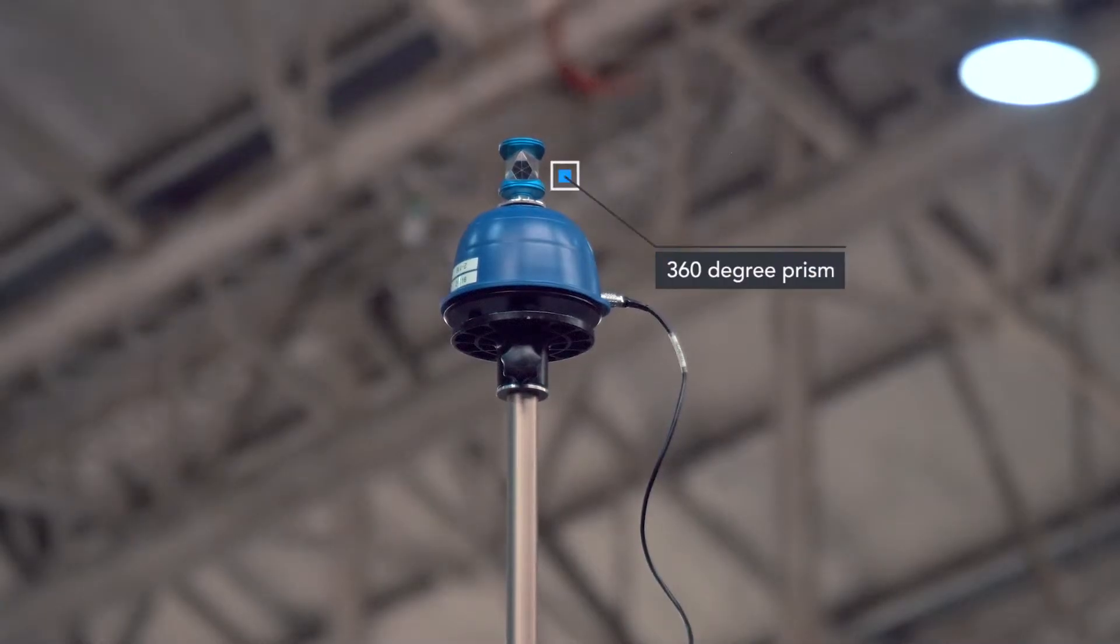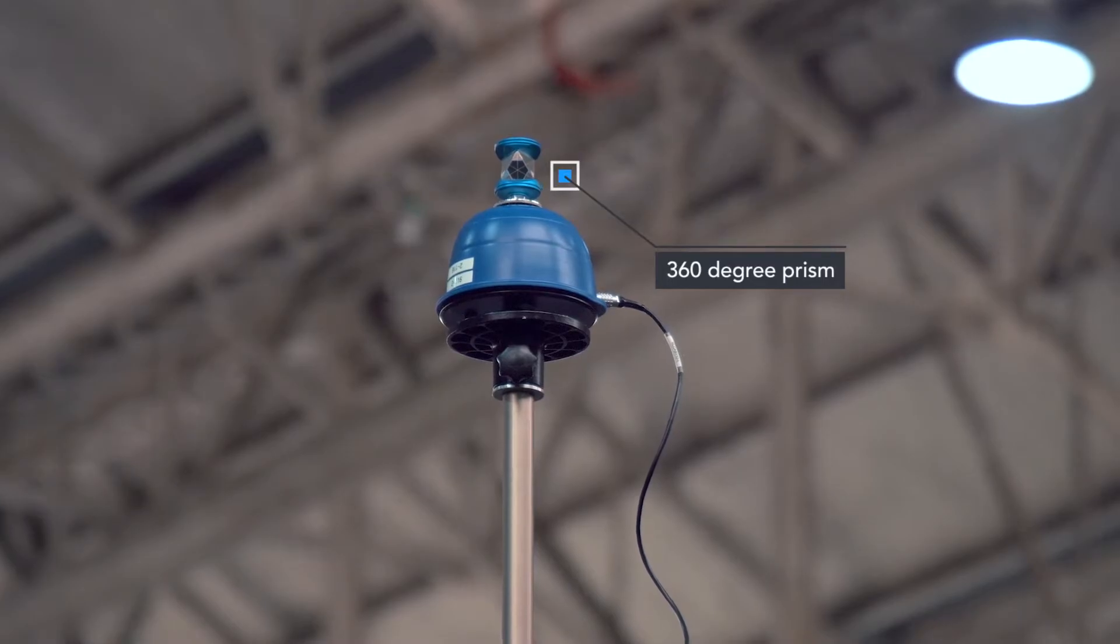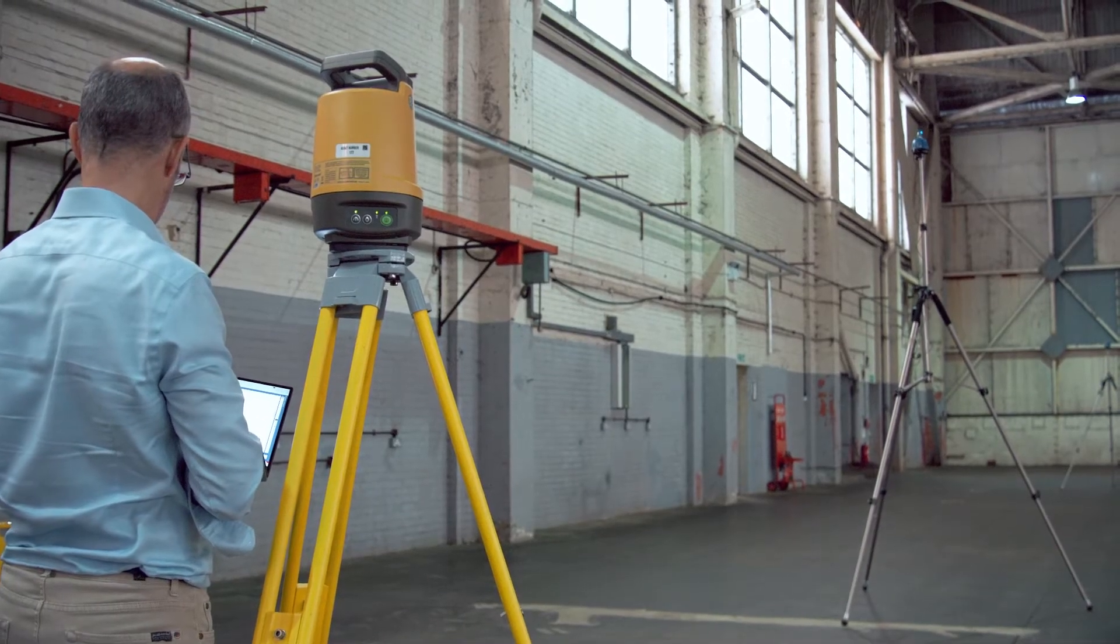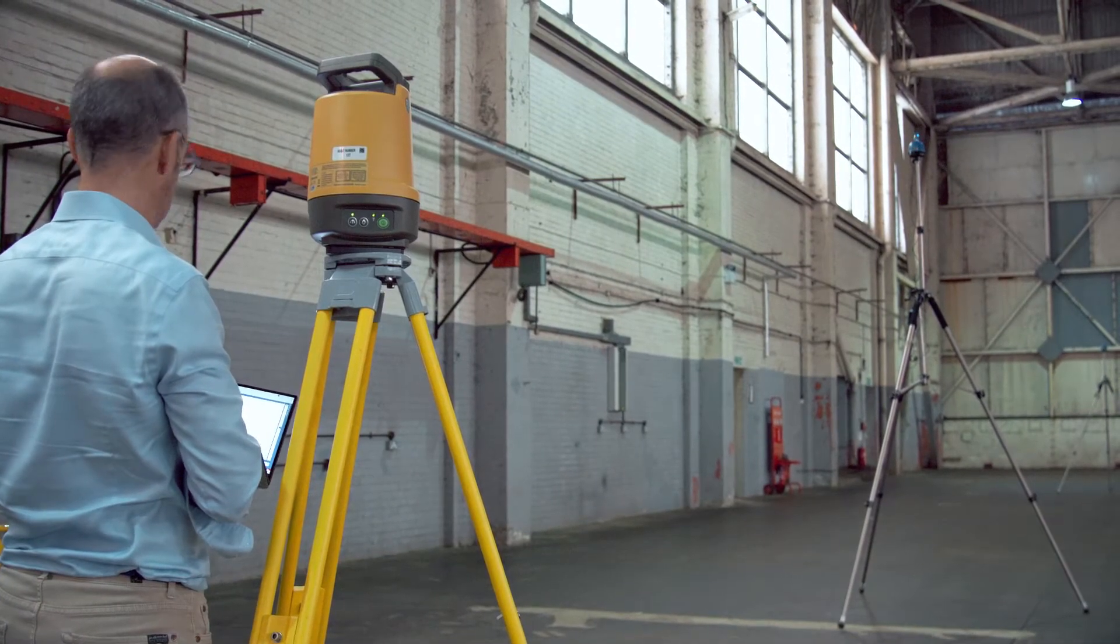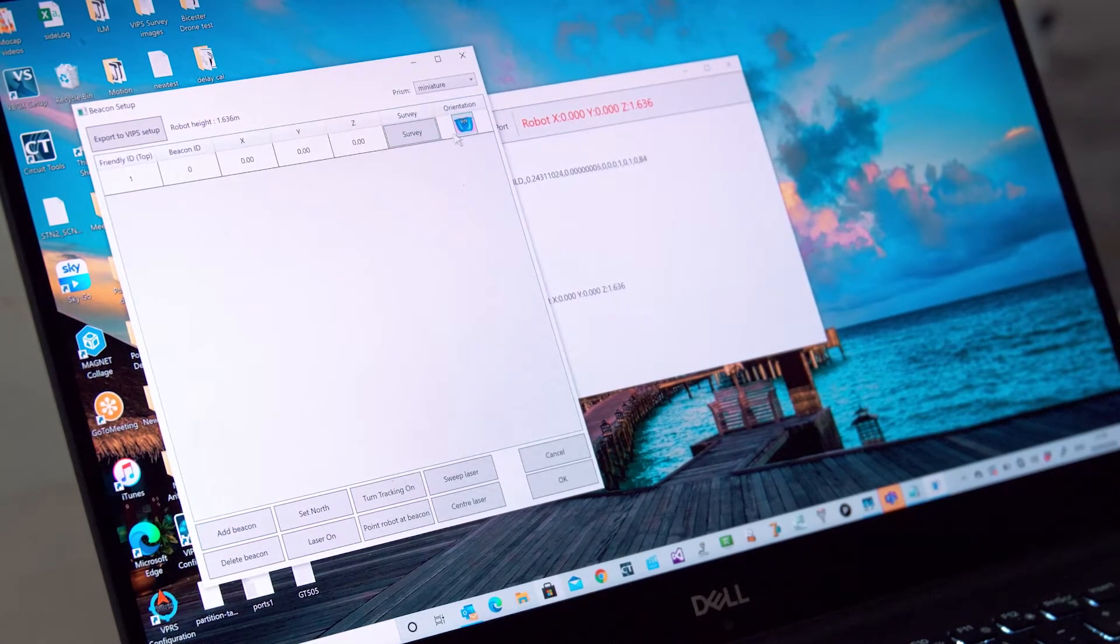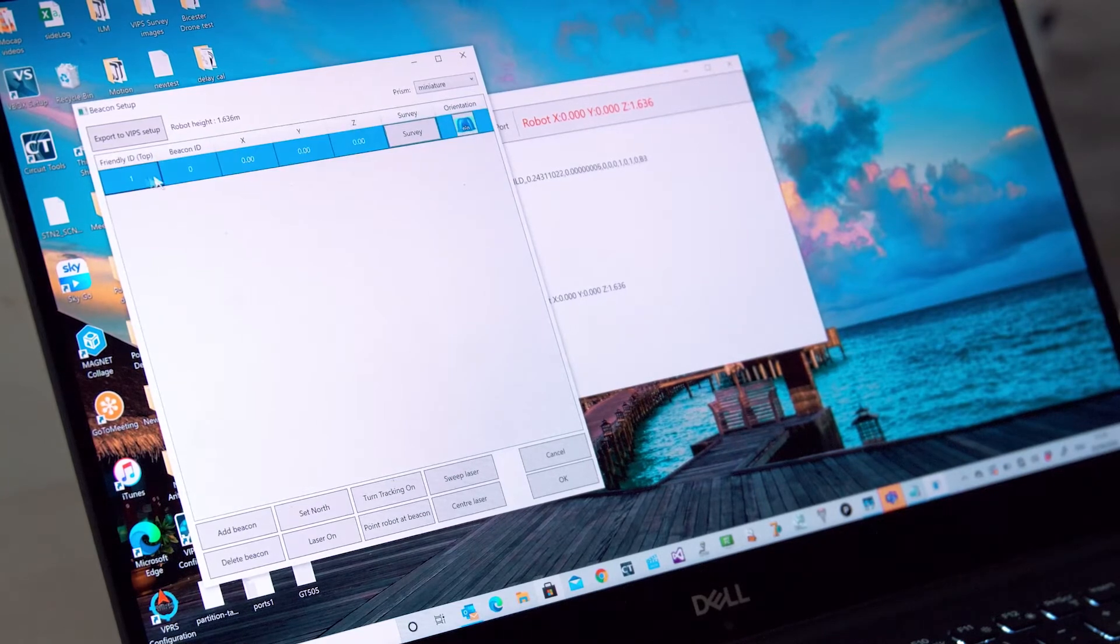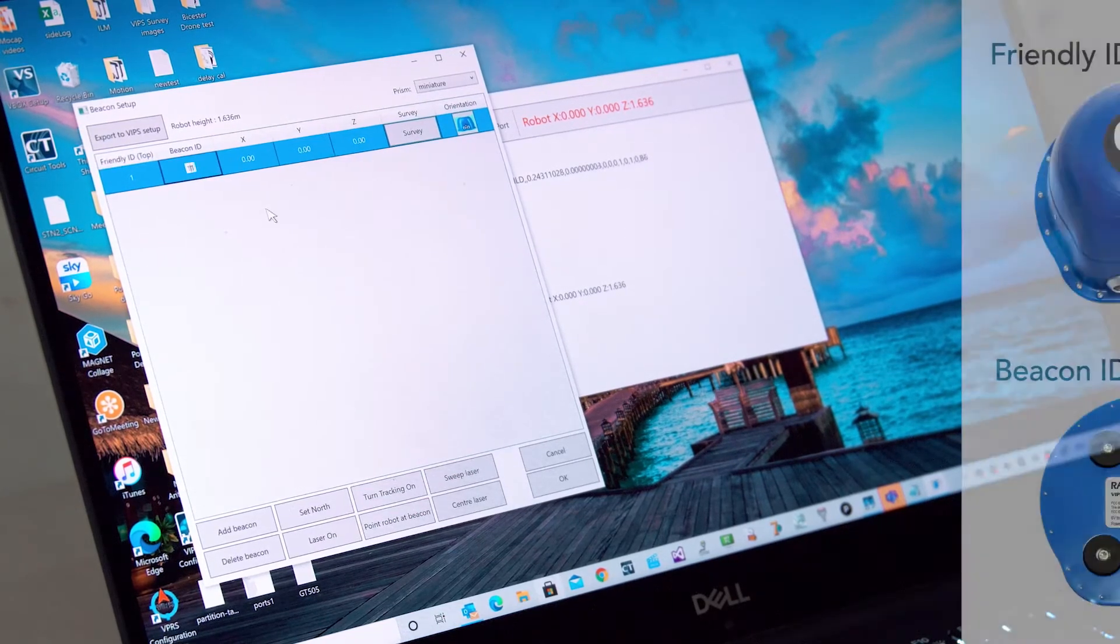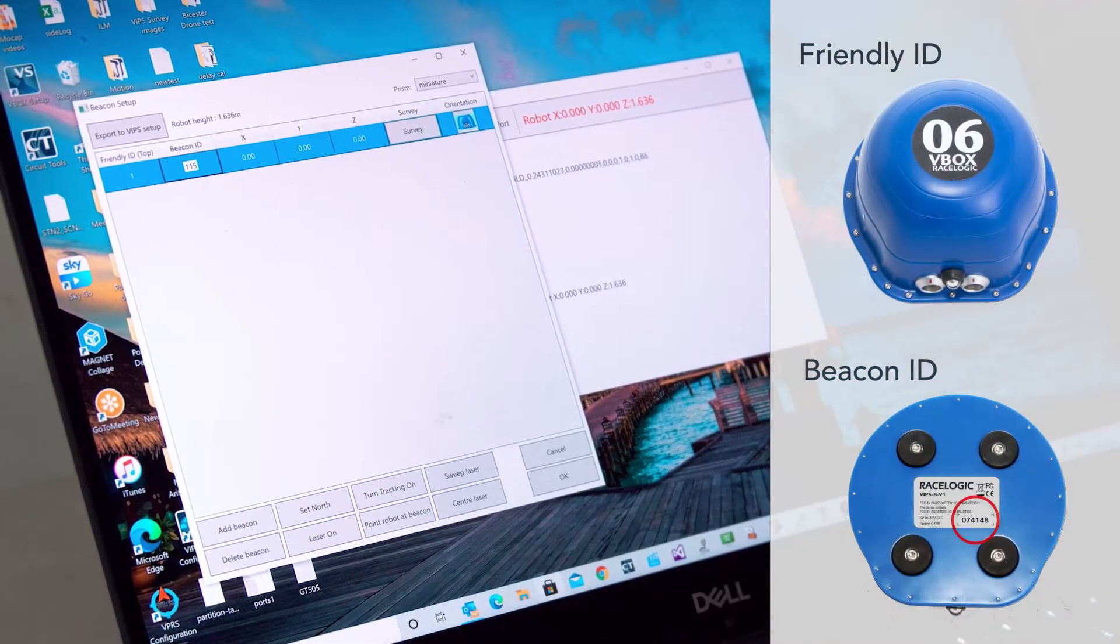By placing a prism on top of each of the beacons, it allows the Total Station to locate their positions. Click the Add Beacon button and make sure the Beacon Orientation icon is correct for your setup. Enter the IDs found on the top and bottom of each beacon.